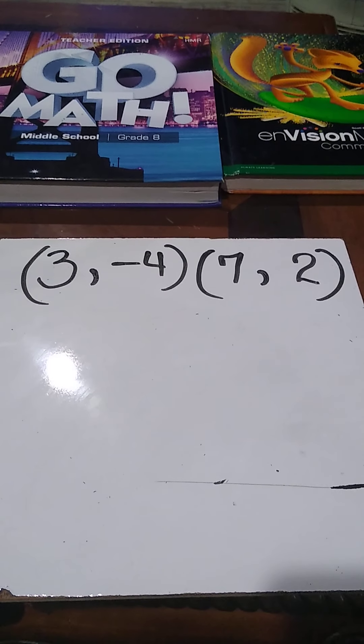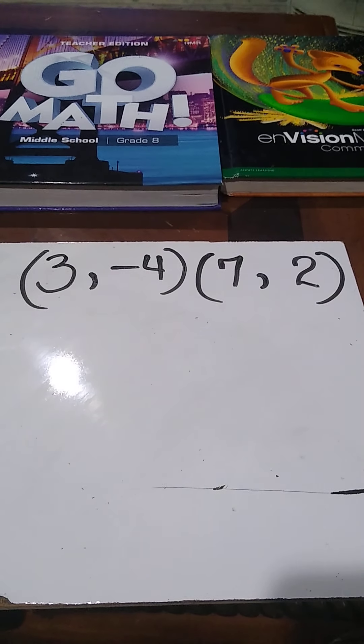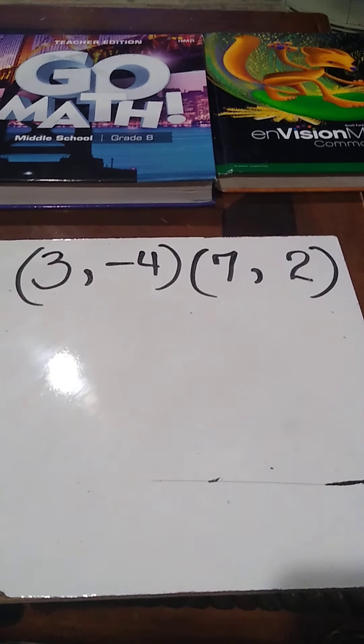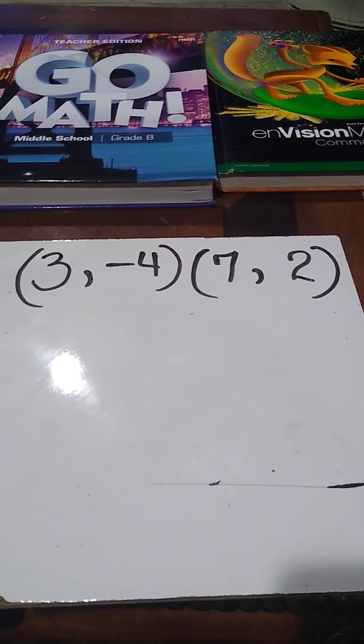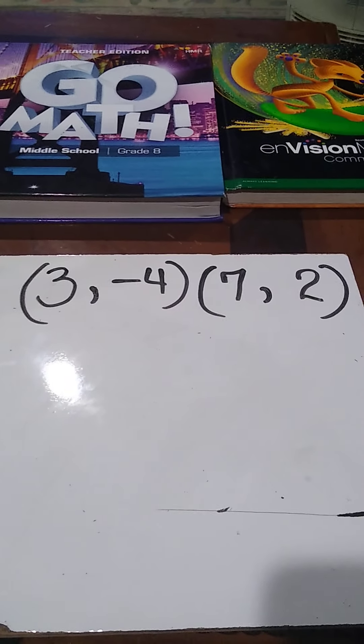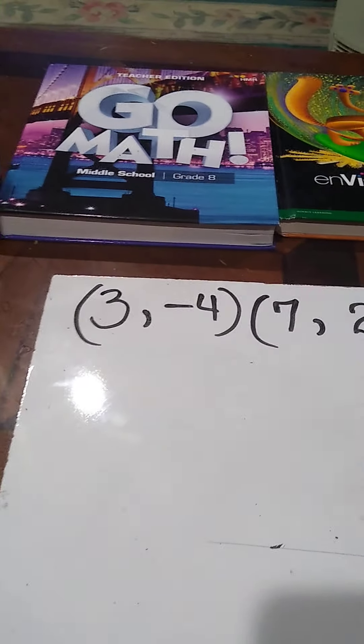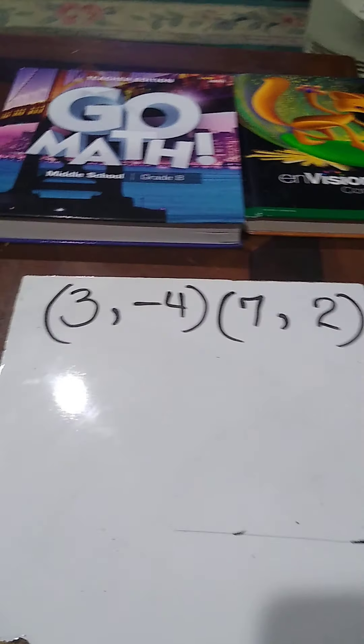The first thing I want to remind you is that in order to find the slope of two coordinate pairs, you have to remember that y is the numerator and x is the denominator. Basically, you're finding the difference between the y's and the difference between the x's. That's it.